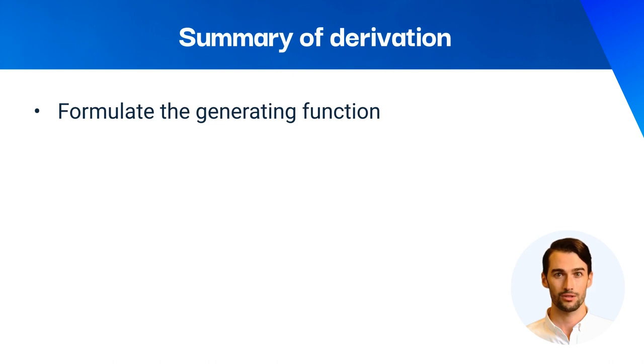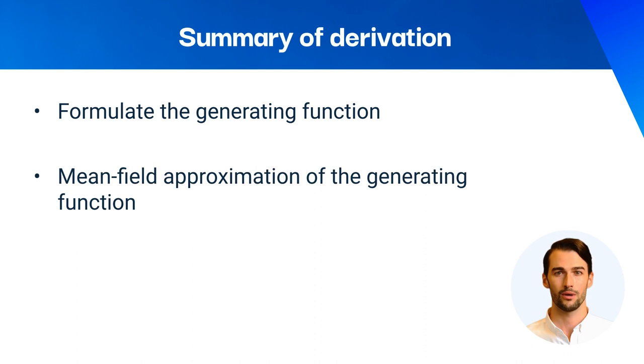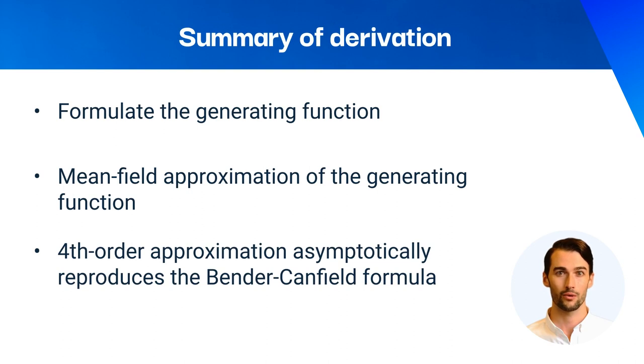The summary of derivation is as follows. First, the generating function for the number of graphs is formulated. Then, the mean field approximation is applied to the exponent of the generating function. It is confirmed that the fourth order approximation reproduces the Bender-Canfield formula in the limit of large graphs.